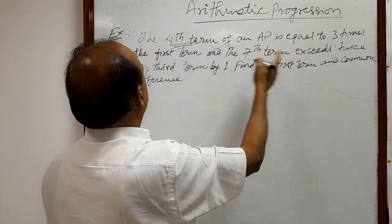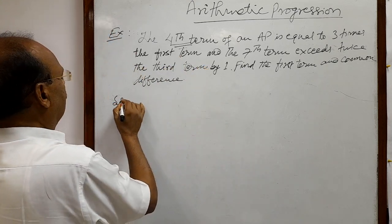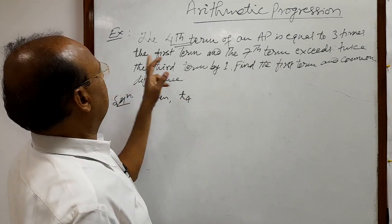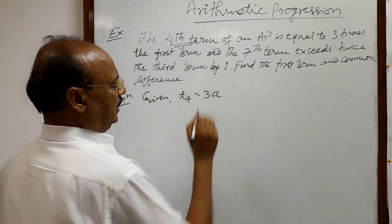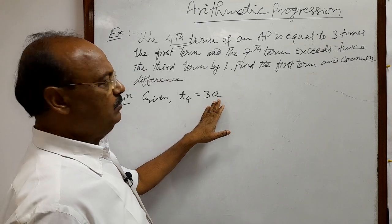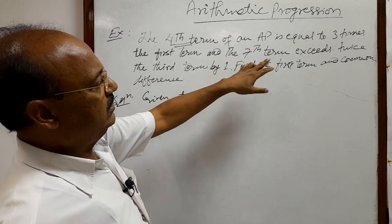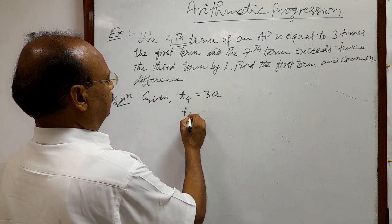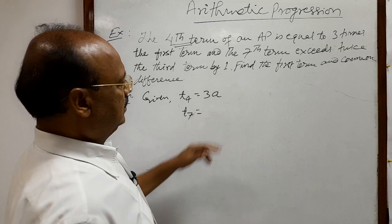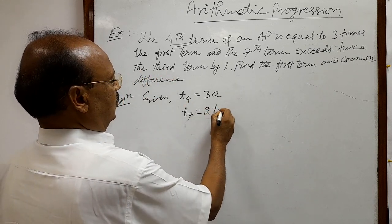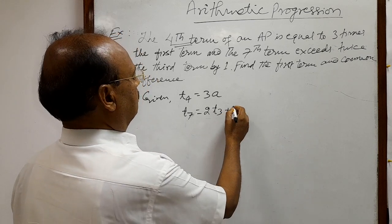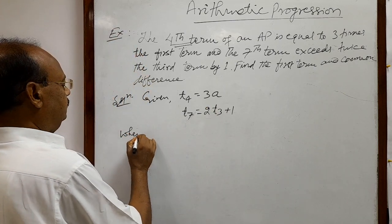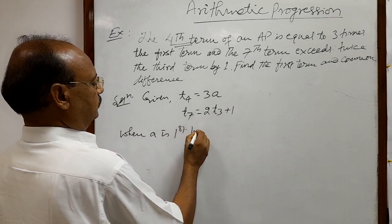So the condition is: the fourth term of an AP is equal to three times the first term, that is t4 = 3a, where we are supposing a as the first term and d as the common difference. The seventh term exceeds twice the third term by one. We have to find the value of a and d.